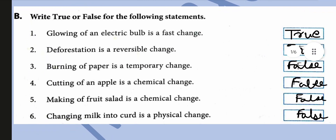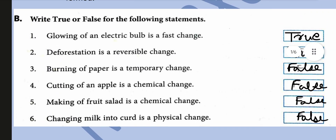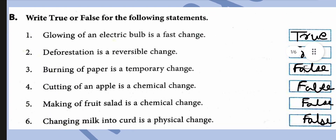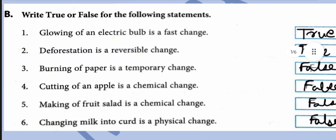Now true and false. Glowing of an electric bulb is a fast change — this is a true statement. Deforestation is a reversible change — true. Burning of paper is a temporary change — false. Cutting of an apple is a chemical change — false. It is not chemical because it has just been cut.